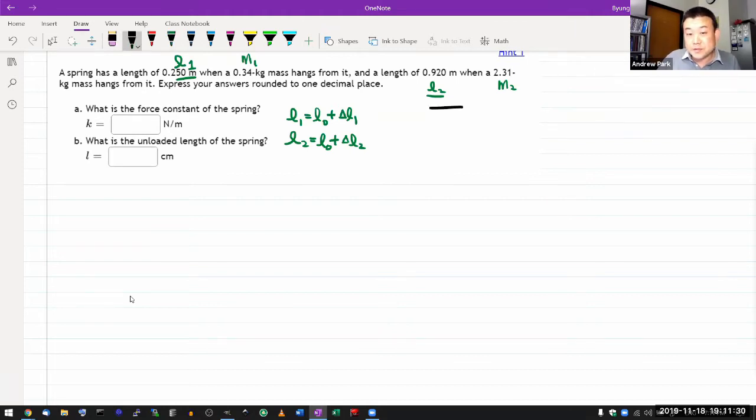When you imagine this situation where a mass is hanging from a spring, then you can imagine the free body diagram for this. Once the gravity is pulling down with the force Mg, the spring force is pulling up with the force spring force, which should be given by Hooke's law, K spring constant times the extension of the spring.